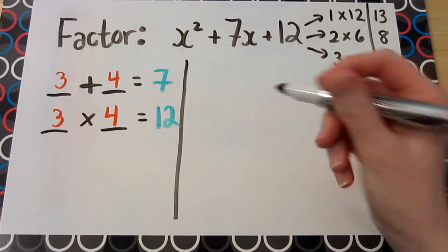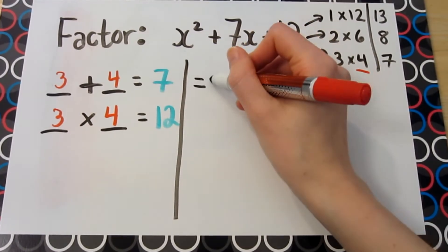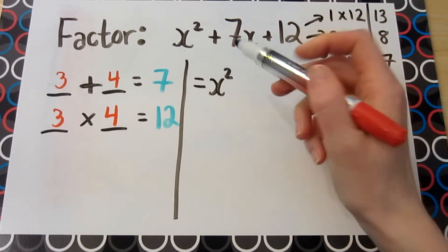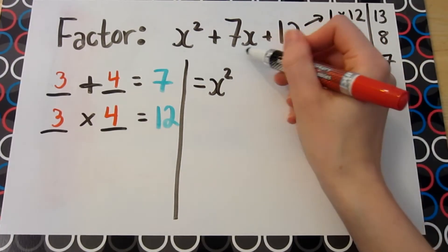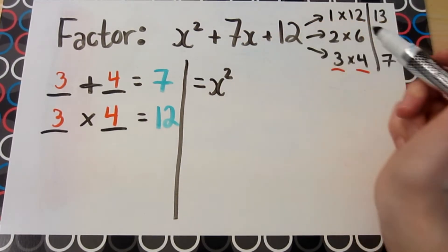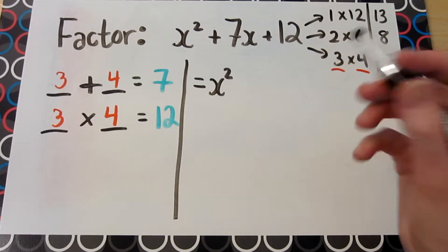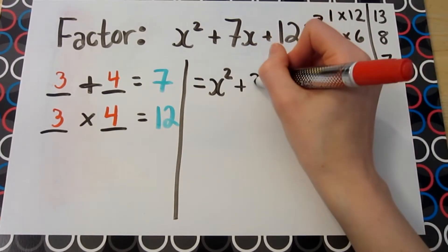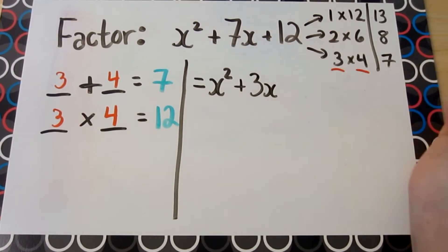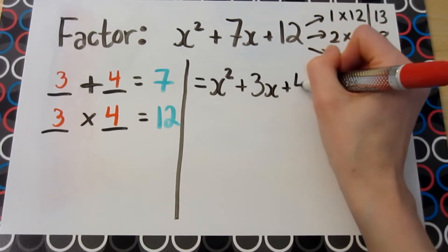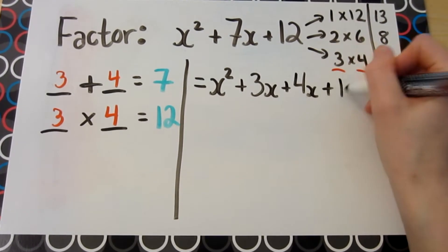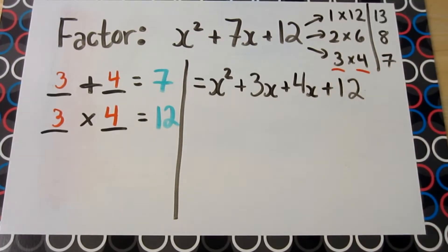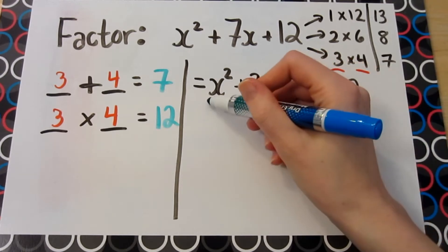Putting this together, to start factoring we keep the first term as is — the term with x squared. Next, we want to change the 7x into a sum of the two numbers we found: 3x along with 4x. And finally, we leave the last term as is as well. Next, you want to proceed by factoring using the grouping method.